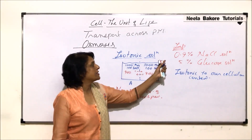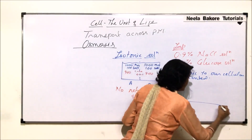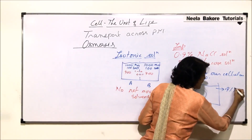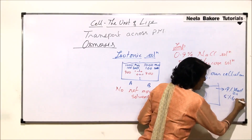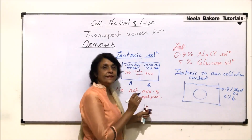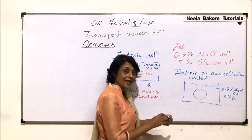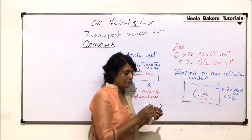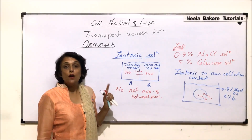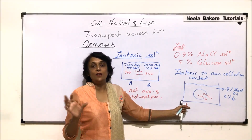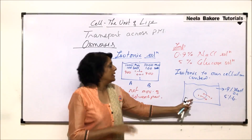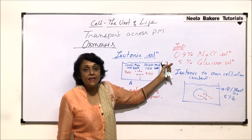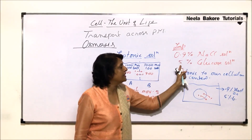If an animal cell is placed in an isotonic solution — either 0.9% NaCl or 5% glucose — water movement will occur equally in both directions, so there is no net movement of water molecules. Nothing will happen to the cell: no change, it will not become turgid and it will not become flaccid. It remains as it is.